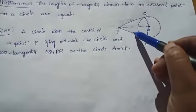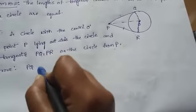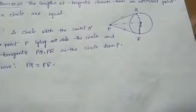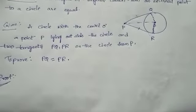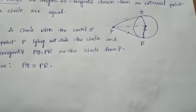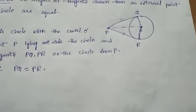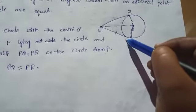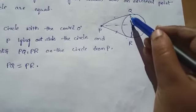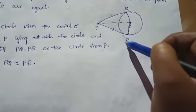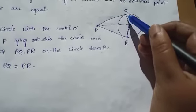We need to prove that PQ is equal to PR. To prove: PQ equal to PR. See proof. Here we have two approaches. First one: according to Theorem 1, the tangent at any point of a circle is perpendicular to the radius through the point of contact.